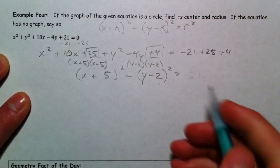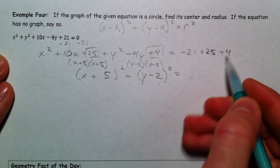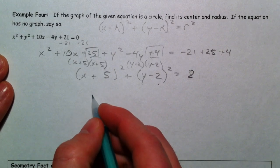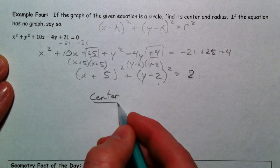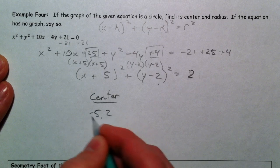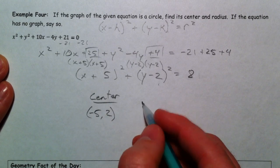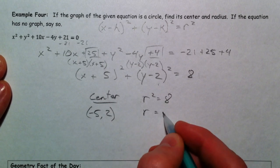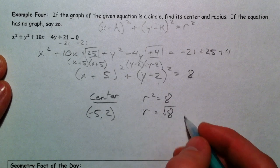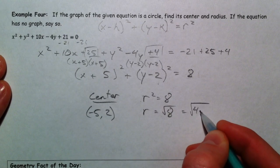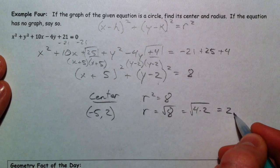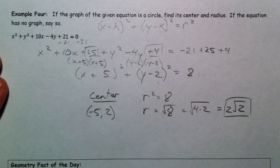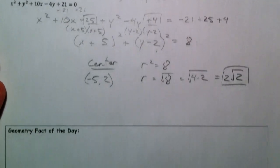So, that gives us a 4 and an 8. And so our center is negative 5 comma 2. And our radius, r squared equals 8, so r equals the square root of 8, which is the square root of 4 times 2, or 2 square root 2.